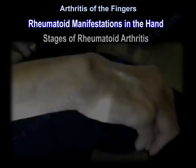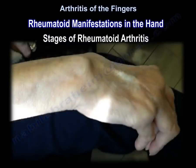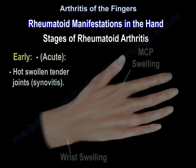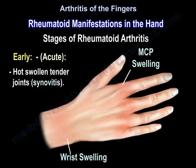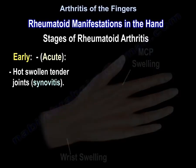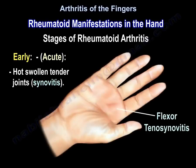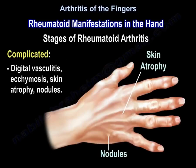The stages of rheumatoid arthritis of the hand: early acute stage — hot, swollen, tender joints with synovitis. It can affect the wrist joint, with wrist swelling or MCP swelling, and can also have flexor tenosynovitis. The disease can be complicated by digital vasculitis, ecchymosis, skin atrophy, and nodules, as seen here in this diagram.